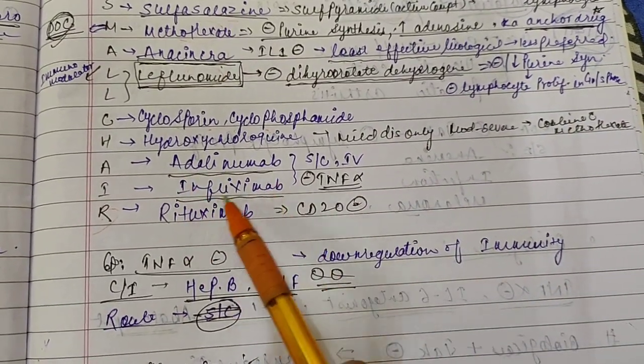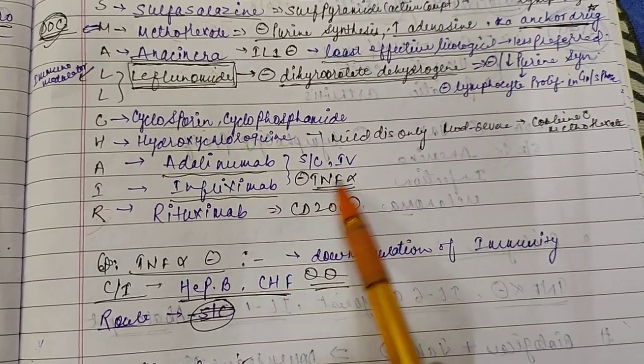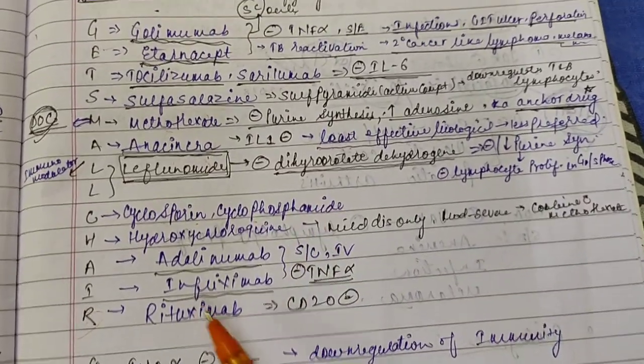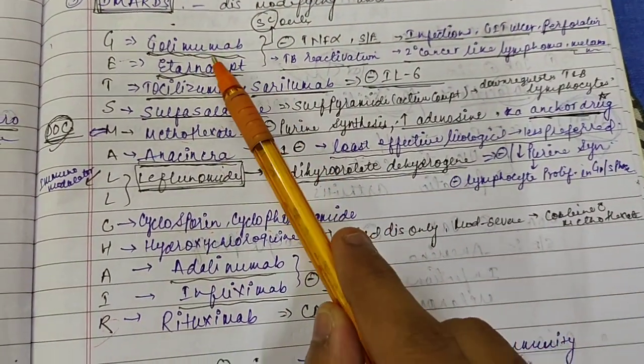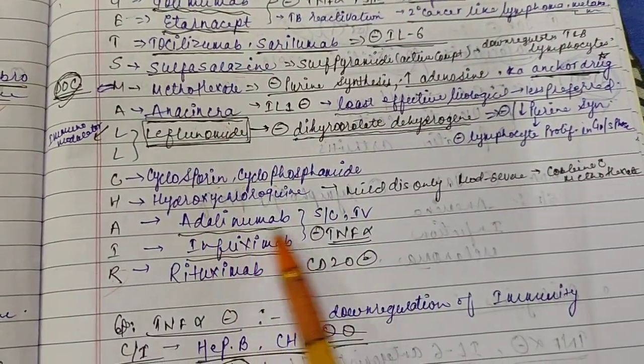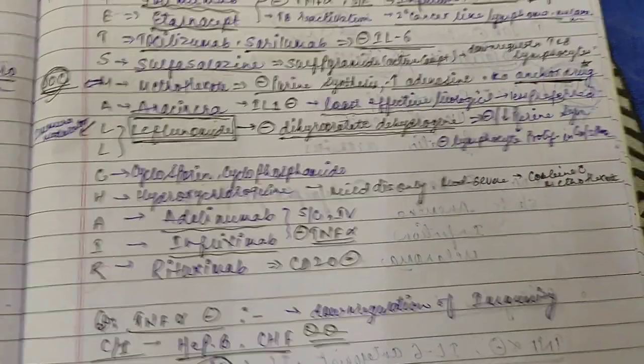Then Adalimumab and Inflexima. Both are interferon alpha inhibitors. So four interferon alpha inhibitors: Golimumab, then Eternasef, then Adalimumab and Inflexima.